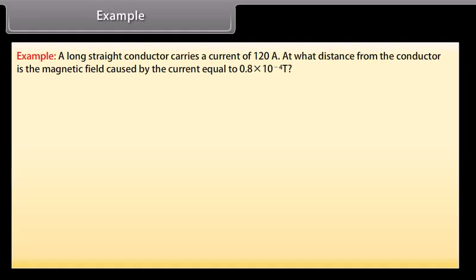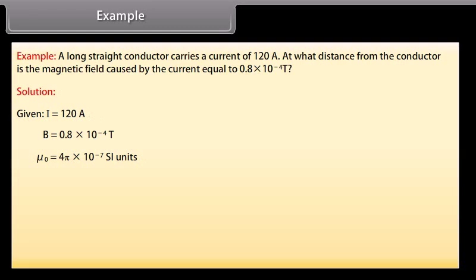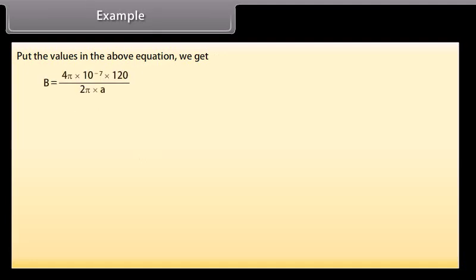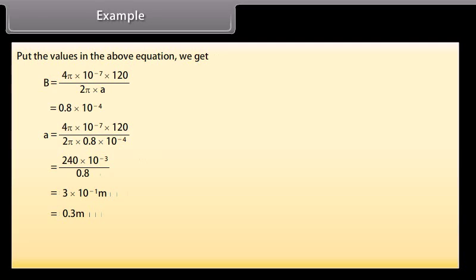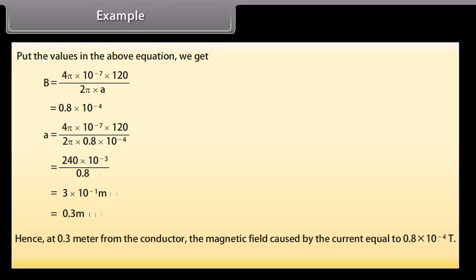Example: A long straight conductor carries a current of 120 ampere. At what distance from the conductor is the magnetic field equal to 0.8 × 10⁻⁴ Tesla? Given: I = 120 A, B = 0.8 × 10⁻⁴ T, μ₀ = 4π × 10⁻⁷ SI units. Using B = μ₀I / (2πR), we get R = 0.3 meters. Hence, at 0.3 meters from the conductor, the magnetic field equals 0.8 × 10⁻⁴ Tesla.